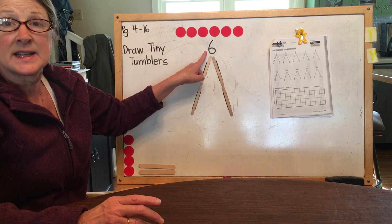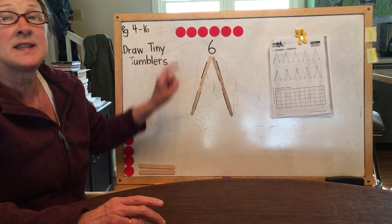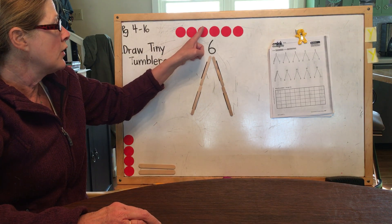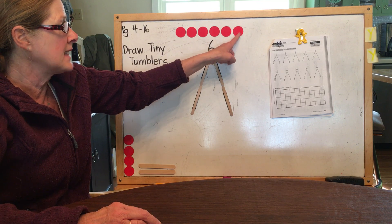And on top of the sixth math mountain live six tiny tumblers. Let's count them. One, two, three, four, five, six.